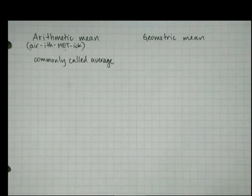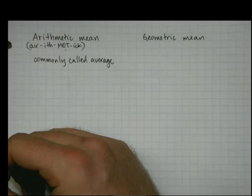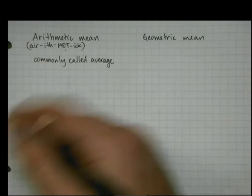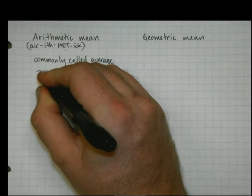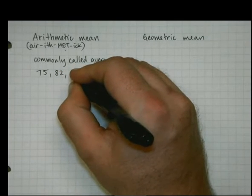It's the one that most people think of when you talk about mean or you talk about average. It's when you add up all of the numbers and divide by two. So if I had four numbers, let's say 75, 82, 93, and 86.